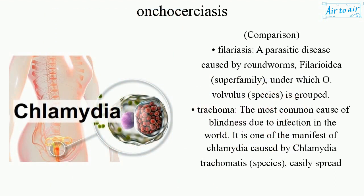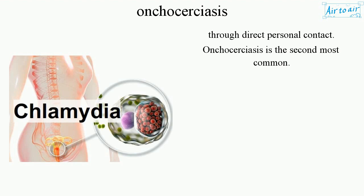Comparison. Filariasis is a parasitic disease caused by roundworms of the Filarioidea superfamily, under which Onchocerca volvulus species is grouped. Trachoma is the most common cause of blindness due to infection in the world. It is a manifestation of chlamydia caused by Chlamydia trachomatis species, and is easily spread through direct personal contact. Onchocerciasis is the second most common infectious cause of blindness.